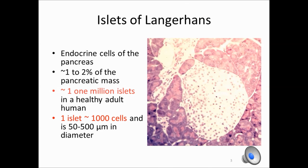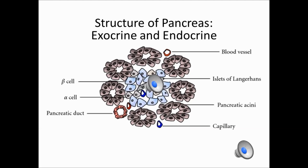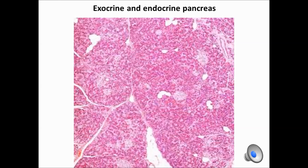All endocrine cells of the pancreas comprise about 1-2% of the pancreatic mass, and in an adult human there are about 1 million islets within the pancreas. The islets of Langerhans are embedded in exocrine pancreatic tissue, as can be seen on this slide and also even better on the next slide. You can actually see on this histology slide that the islets of Langerhans truly are like islands within the exocrine pancreatic tissue.